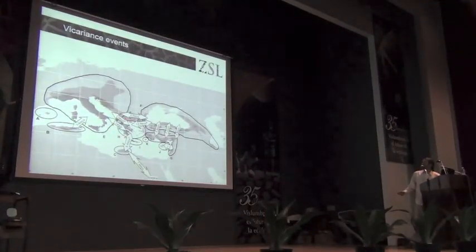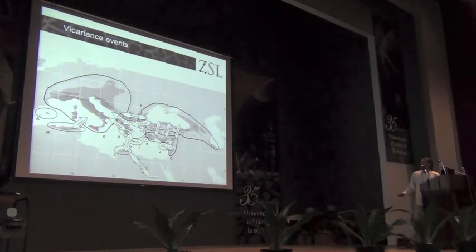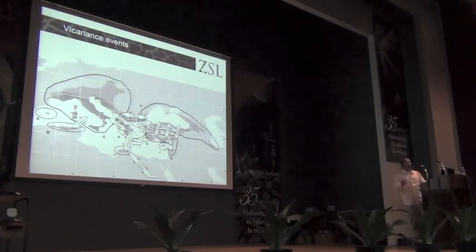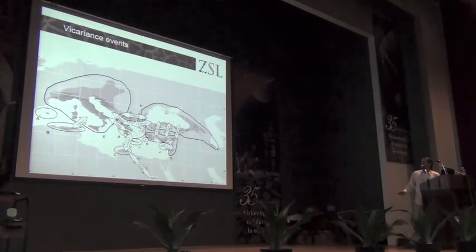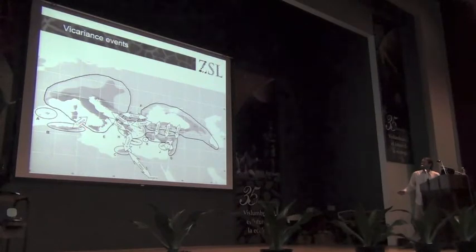Once we do this analysis we can then visualise where these transitions happen. So these are the vicariance events — presumably a previous uniform distribution that was split apart by some geographic events. Here's the formation of the Tyrrhenian Sea, which was about 4 million years ago, and we've got our vicariance event at around 3.8 million years ago. So our vicariance event fits well with the geology.